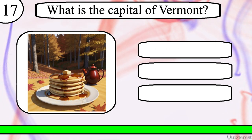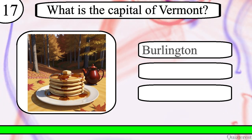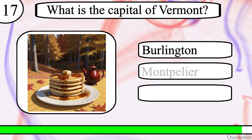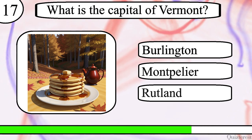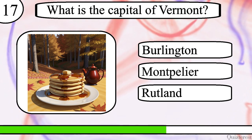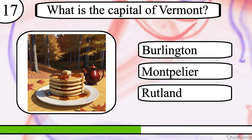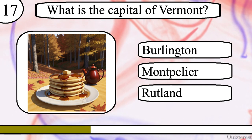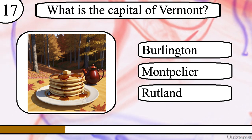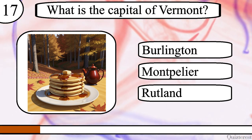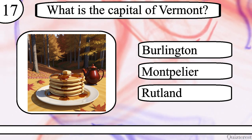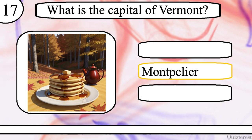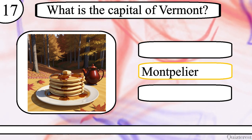Question 17. What is the capital of Vermont? Burlington, Montpelier, or Rutland? The correct answer is Montpelier.